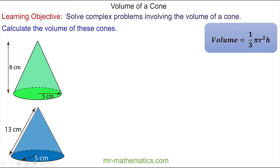Welcome to our lesson on finding the volume of a cone. We're going to use this formula to work out the volume of two cones. The height is this length, as it makes a perpendicular angle to the base. The height is 8cm and the radius is 5cm.